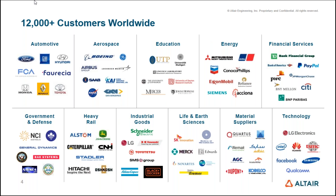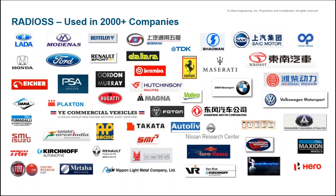This is a partial list of customers across any industry vertical — whether automotive, aerospace, education, or energy. We have customers using our tools and technologies for various applications, not only automotive but also defense and other application areas. For Altair Radioss specifically, it is used by almost 2,000 plus companies — not only OEMs but also various Tier 1 and Tier 2 suppliers. In India, Altair Radioss is being used by almost 100 plus companies.